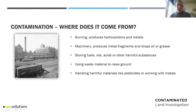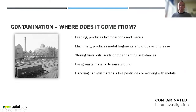So there are several sources of contamination: burning, which produces hydrocarbons and metals; machinery, which produces metal fragments and oil or grease; the storing of fuels, oils, acids or other harmful substances which can end up in the ground if not stored correctly; and using waste ground material to raise land. Handling harmful materials like pesticides or working with metals is another source. One relatively common contamination source I've been dealing with lately is sheep dips, which are full of pesticides spread around by poor handling — and those pesticides can be really persistent.